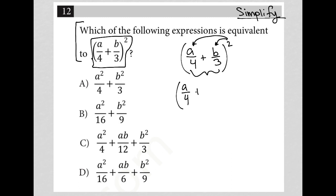well, if a over four plus b over three squared, that means I have a over four plus b over three times a over four plus b over three, right? I have two of them. That's what the squared means.